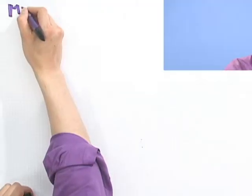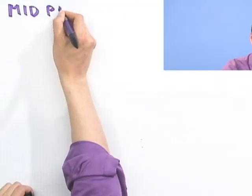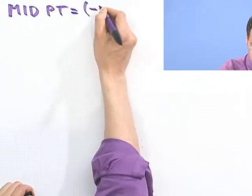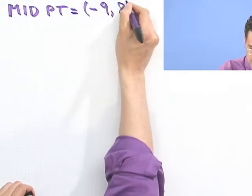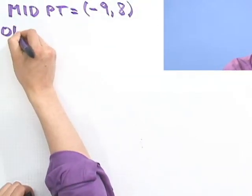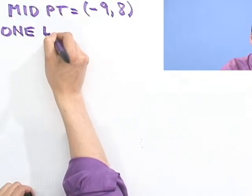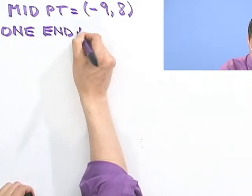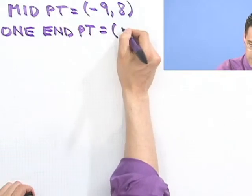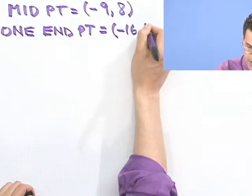Suppose that we know that the midpoint is equal to minus 9 comma 8, and one endpoint, so one endpoint is equal to minus 16 comma 9.